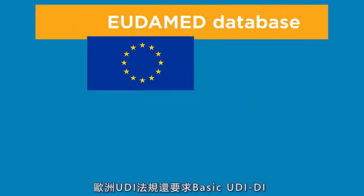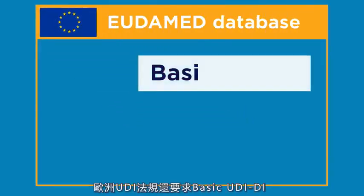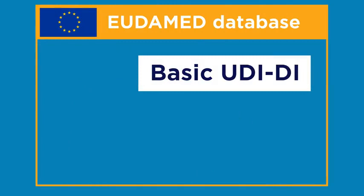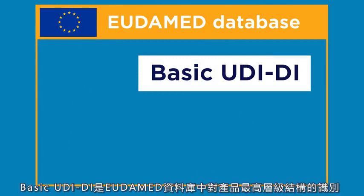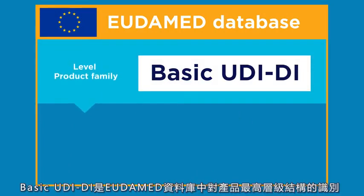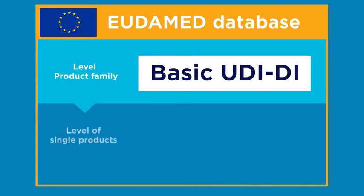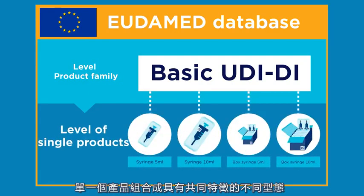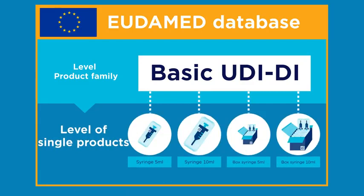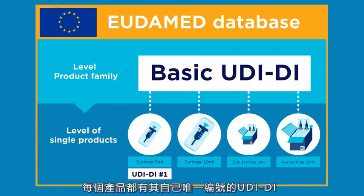The European UDI regulations also require a basic UDI-DI. The basic UDI-DI is the highest level of identification of the product hierarchy within the EUDAMED database, and identifies an entire product family or a product model. In a product family, individual products are combined in different variants and with common characteristics. Each product has its own unique number, the UDI-DI.